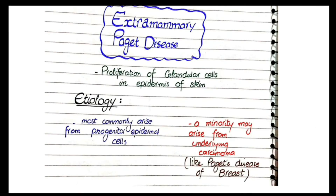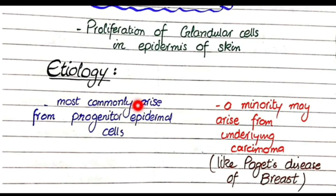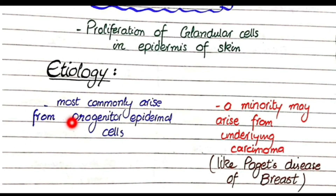How does Paget's disease of the vulva develop? Most commonly, this arises from progenitor epidermal cells. Some progenitor cells present in the epidermis become abnormally differentiated into glandular cells, so you will see glandular cells in the epidermis of the skin — that is Paget's disease of the vulva.